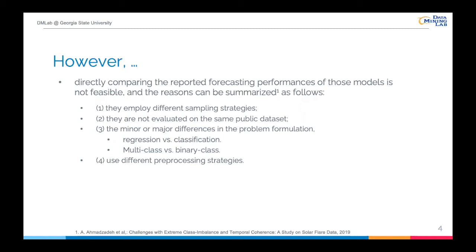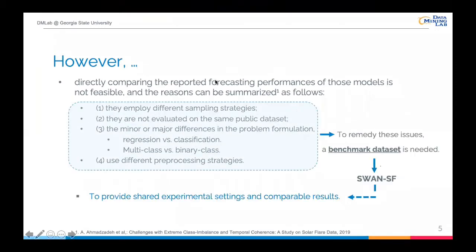The last reason is these works apply different pre-processing strategies. In sum, each of these decisions changes the difficulty of the task, which makes the numerical comparison of the reported scores meaningless. To remedy these issues, a possible solution is to provide the same dataset and same pre-processing pipeline, which enables us to compare different models fairly.